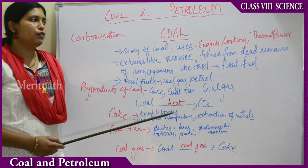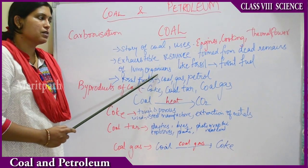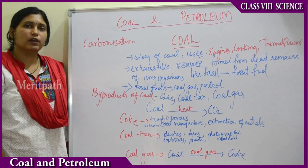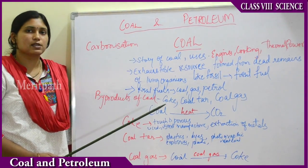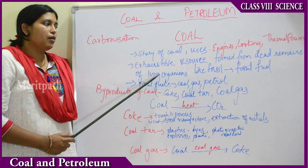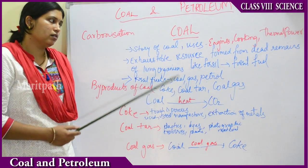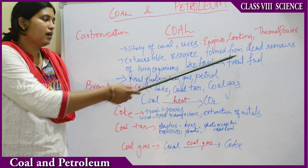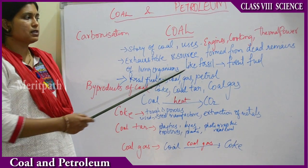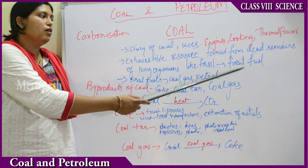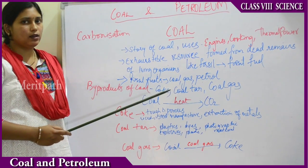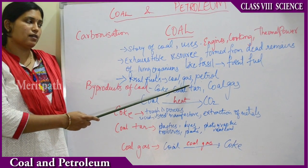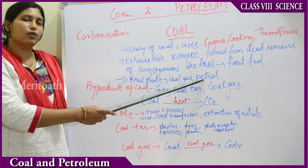Coal is basically formed from the dead remains of living organisms. When living organisms die, they are called fossils — the remains of dead organisms. Coal is formed from fossil remains, so it is called a fossil fuel. Other examples of fossil fuels are coal, CNG (compressed natural gas), and petrol, which is nothing but petroleum.